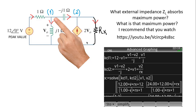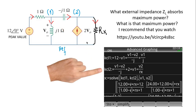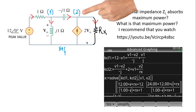KCL equation two, corresponding to the second node: currents going in — there are two: (V1 − V2)/(−j), and the current source 2·V0. But V0 is just V1, so it's 2·V1. The current leaving that node is V2/R_X.